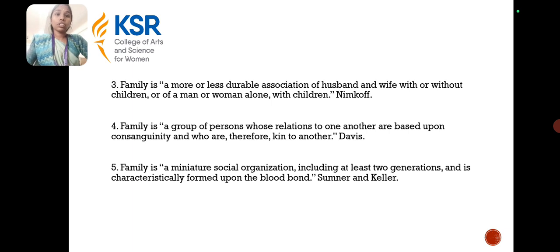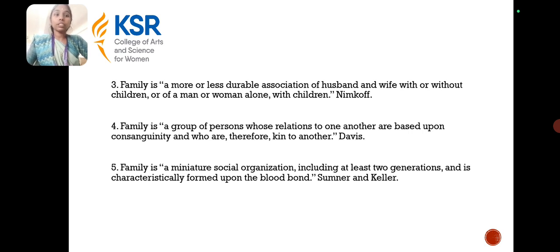The next definition: a more or less durable association of a husband and wife with or without children, or a man or woman alone with children. This was the definition given by Nimkov. And a group of persons whose relations to one another are based upon consanguinity and who are therefore kin to one another — this definition was given by Davis.